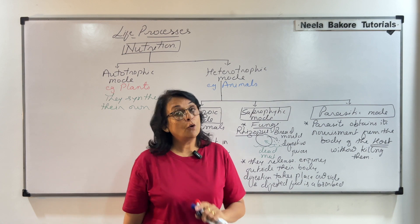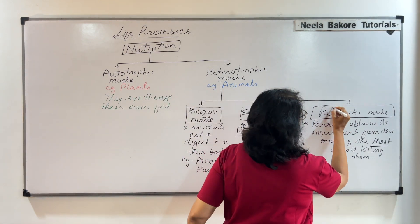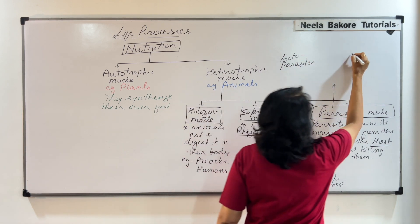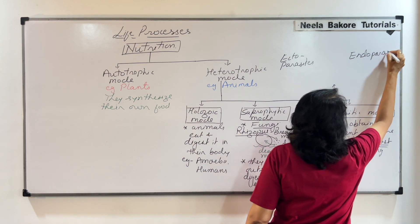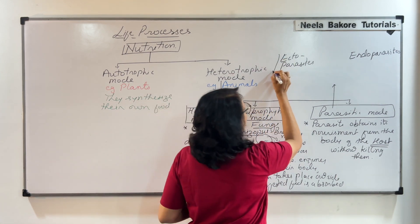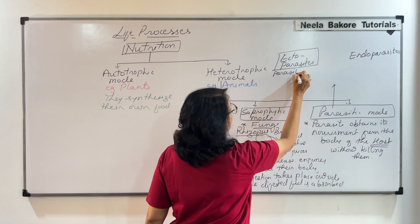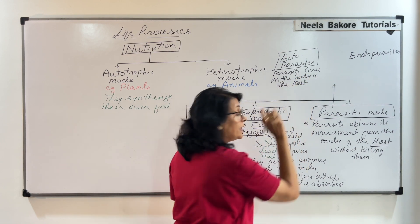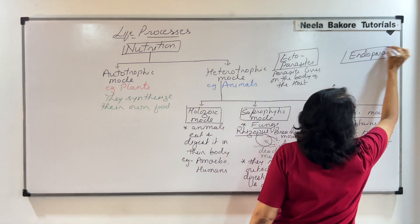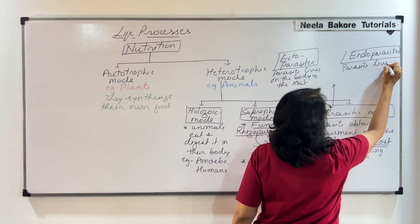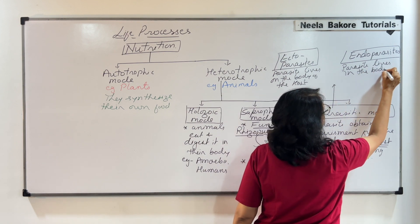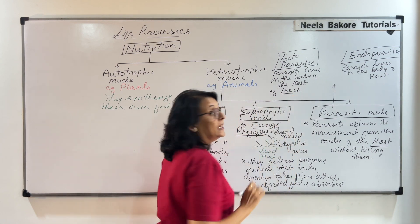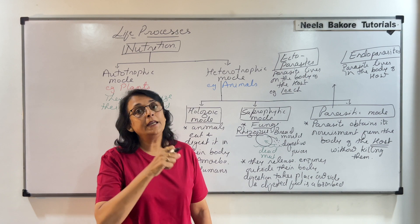Parasites can be of two types: ectoparasites and endoparasites. Ectoparasites live on the body of the host, not inside it. Endoparasites live inside the body of the host. One example of an ectoparasite is leech, which attaches to the body of animals and sucks their blood. Blood is the food of this animal, so the leech is the parasite and, say, a cow would be the host.